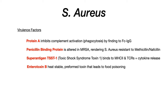Moving on, let's talk about enterotoxin B — the name tells you exactly what it does. Entero means GI system, and enterotoxin B is a heat-stable toxin that causes food poisoning. If somebody ingests food and two to six hours later has symptoms of food poisoning, think enterotoxin B from Staph aureus. It's heat stable, so cooking the food doesn't kill the preformed toxin — it persists through cooking and causes food poisoning.